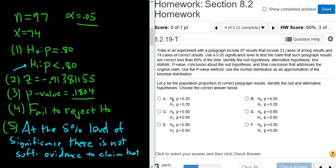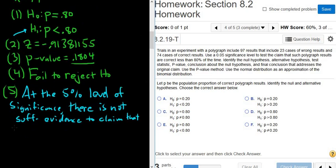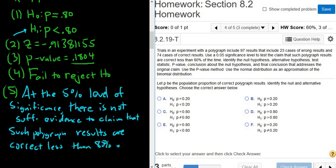Then you can go to the last sentence, or the actual claim, H1. So that the proportion is less than .80. So it's also in the problem though, so that such polygraph results are correct less than 80 percent of the time. So that such polygraph results are correct less than 80 percent of the time. So that would be a full hypothesis test, all five steps.